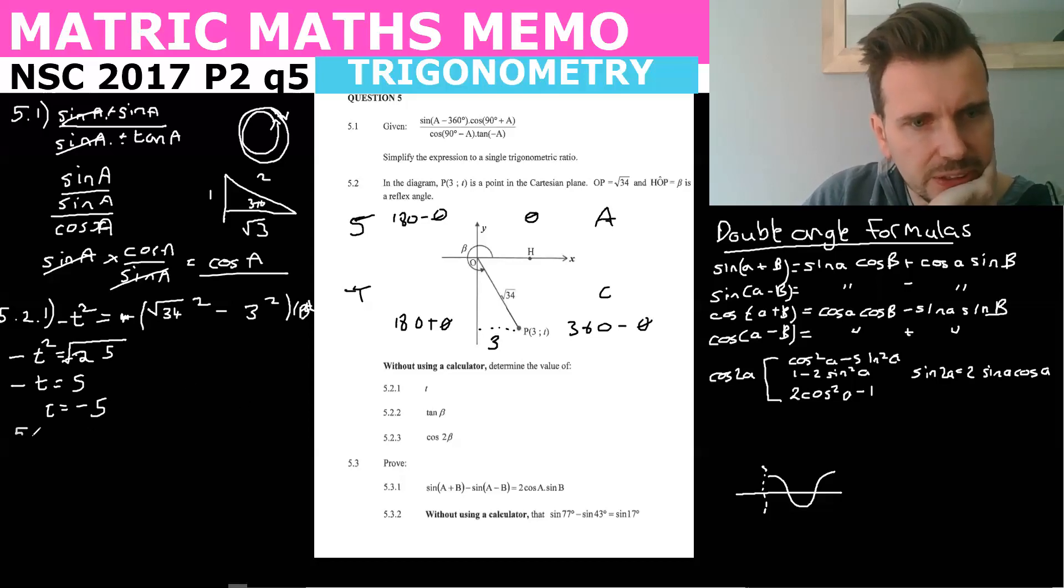Now tan beta is going to be, so it's negative in this quadrant. So now we just do the regular tan. We're going to be treating it like this actually. So this we found out was five, the length was five. So tan is opposite. Well, we can say negative five, then we don't have to change anything, because T is negative five. And then the adjacent is three.